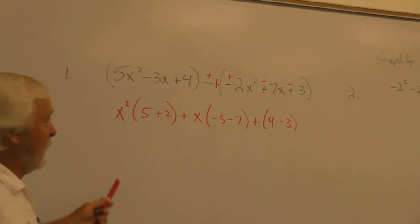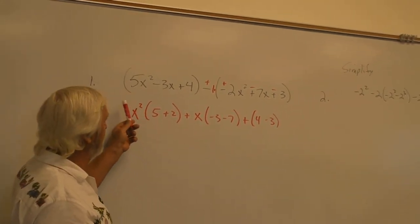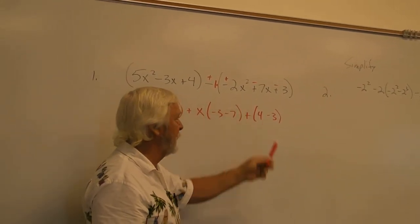Look at the way your work looks. Now, some of you grouped them first. You wrote 5x squared plus 2x squared. That's okay if you did that.